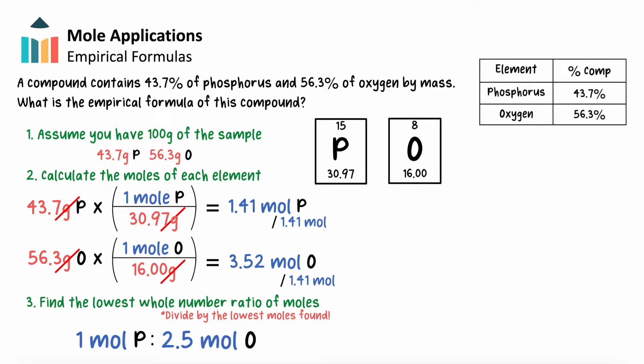We're not quite done yet since this is still not a whole number ratio. Mathematically, the closest whole number to 2.5 is 5, which we get by multiplying the value by 2. This means we'll multiply both mole values by 2, giving a 2 to 5 mole ratio between phosphorus and oxygen and our empirical formula of P2O5.